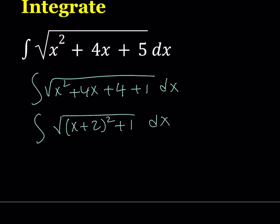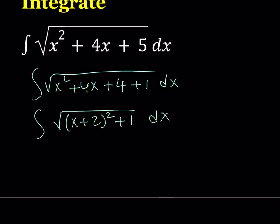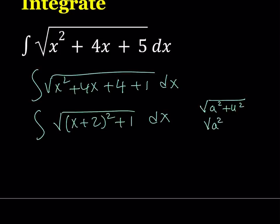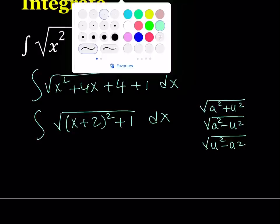This is where the trigonometric substitution comes in. If you have a square root of a squared plus u squared, where u is a function of x, this calls for tangent substitution. If you have the square root of a squared minus u squared, this calls for sine substitution. And if you have u squared minus a squared, this calls for secant substitution. Our example is going to call for tangent substitution.